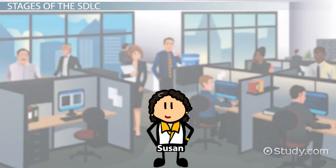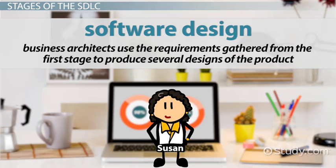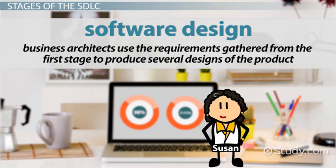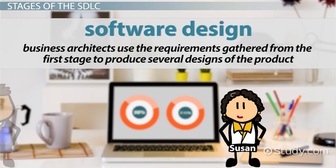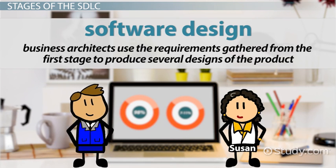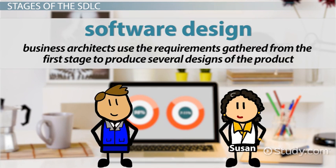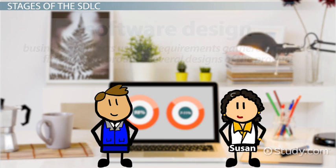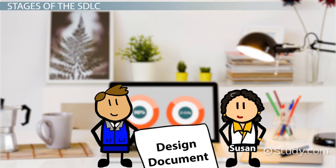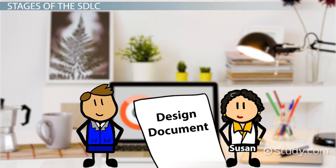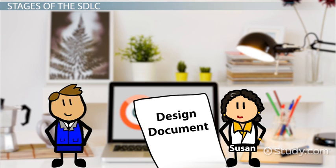The second stage is Software Design. This is when business architects use the requirements gathered from the first stage to produce several designs of the product. Each design is reviewed in a design document by various internal stakeholders, and the best design is then selected.